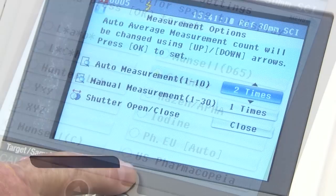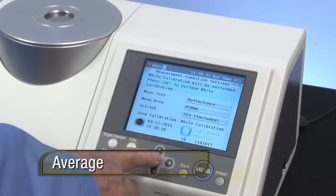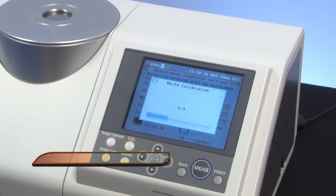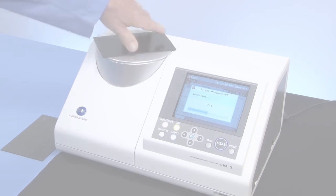The CM5 has an average measurement mode for textured materials. Calibrate, set the auto measurement, and turn the sample while automatic measurements are being taken. This setting is also used with color difference.